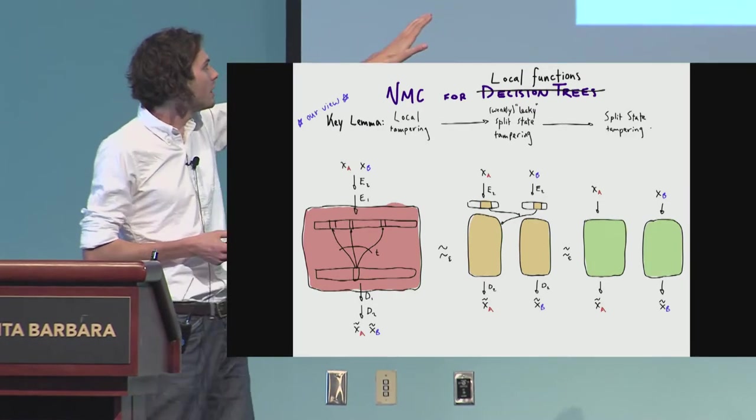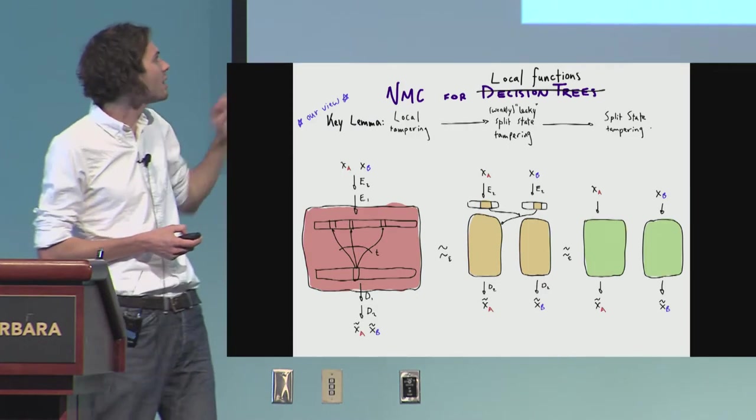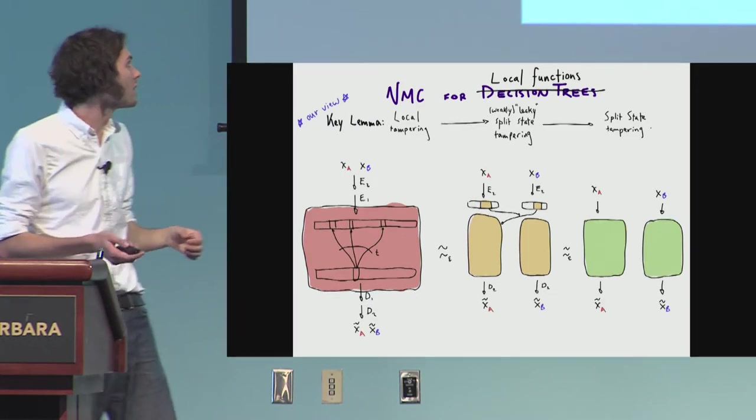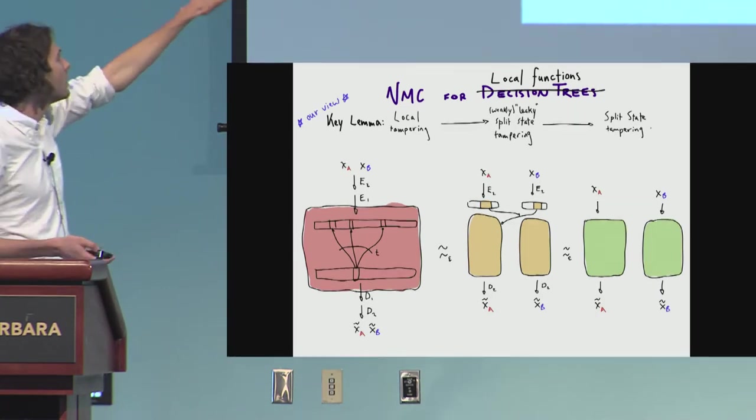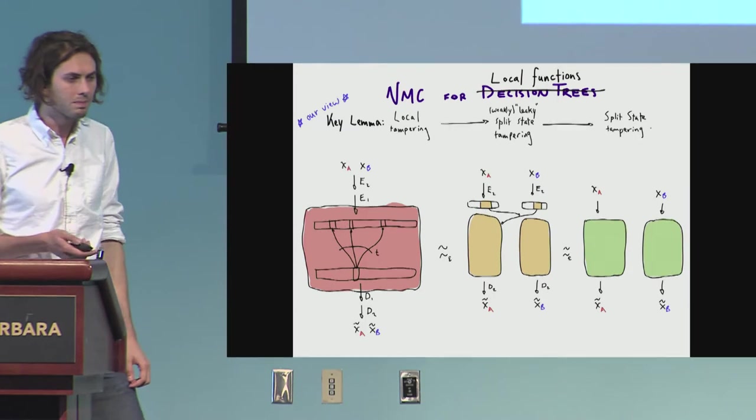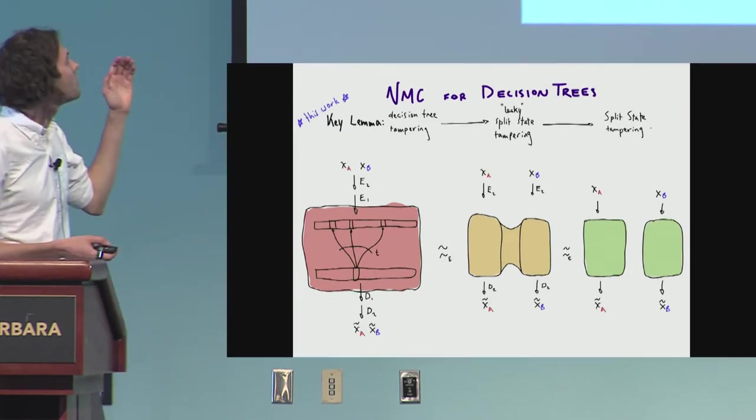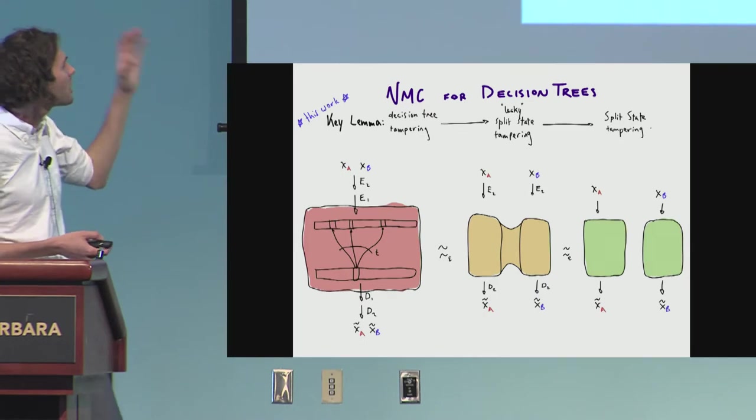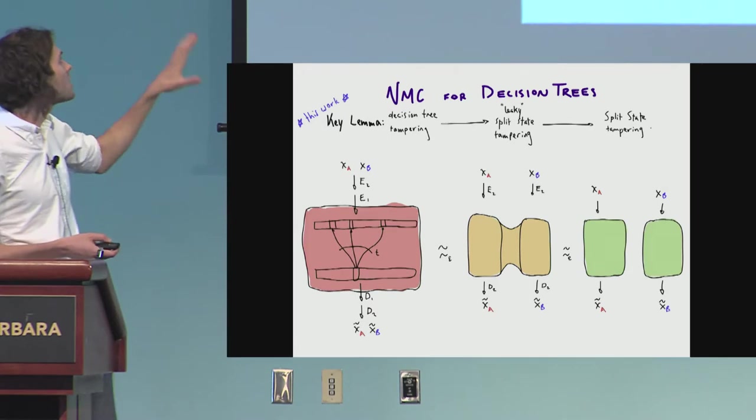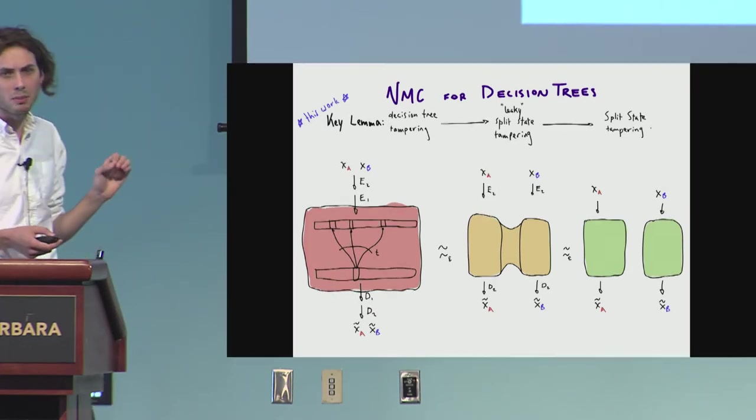So what is this weak leakage tampering? Basically, the functions are allowed to read a couple of bits at the beginning from the other side, and then they have to tamper independently from then on. So the reduction for this, from the weakly leaky split-state to split-state is very simple. It's just you do some secret sharing techniques. The meat is in the left-hand portion of this.